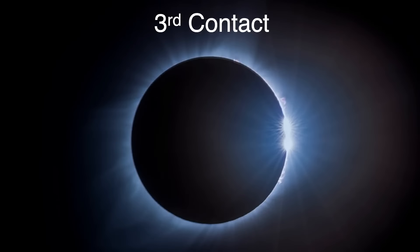Third contact, or C3, is the point when the moon is about to start exiting the solar disk.